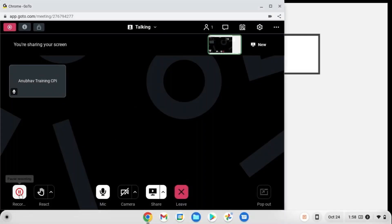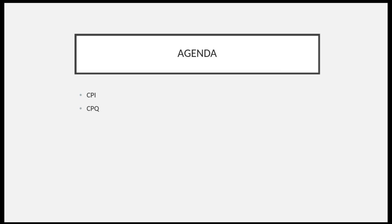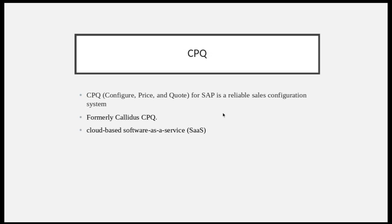This conference will now be recorded. So what is the difference between CPI and CPQ? Let's go ahead and talk first about CPQ. CPQ is Configure Price and Quote, and this is one of the reliable sales configuration systems for SAP.